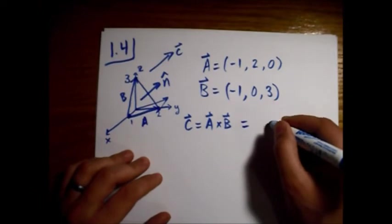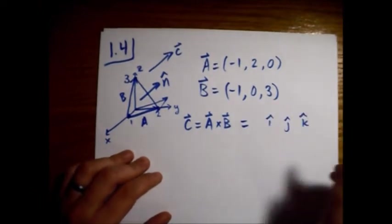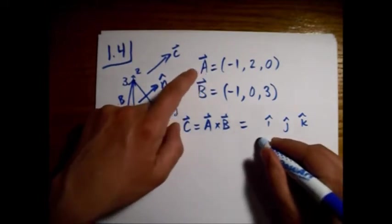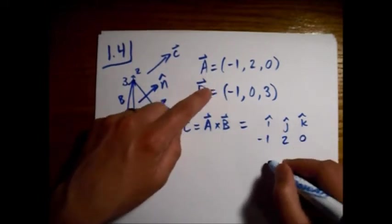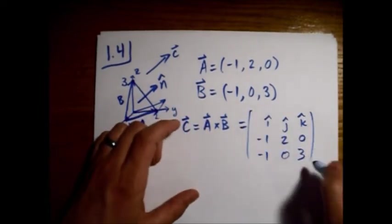All right, so if I just use a little i, j, k, put in a, minus one, two, zero, minus one, zero, three. Take this determinant here.